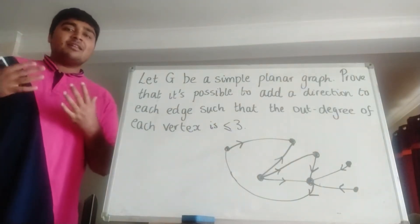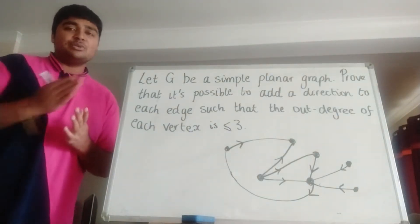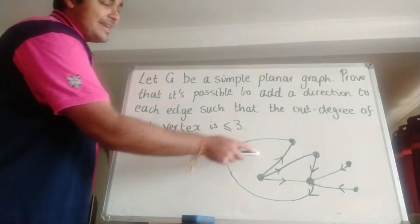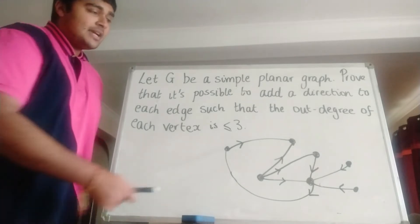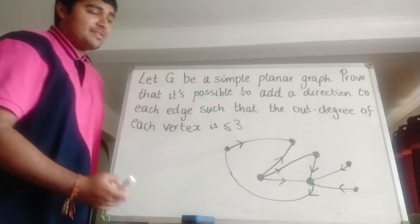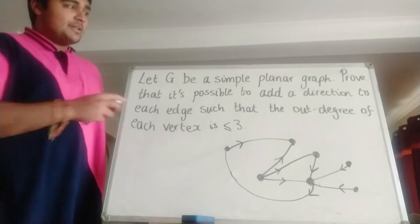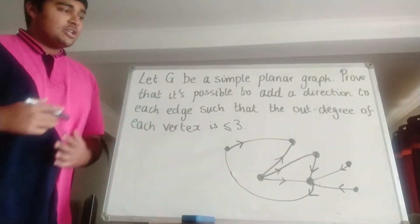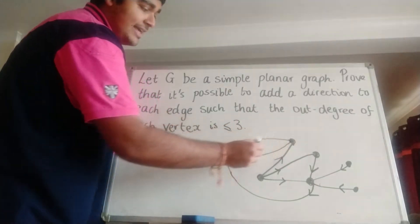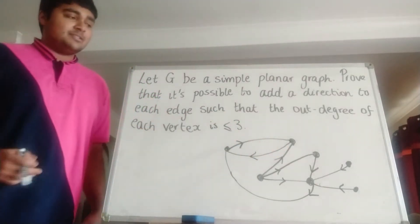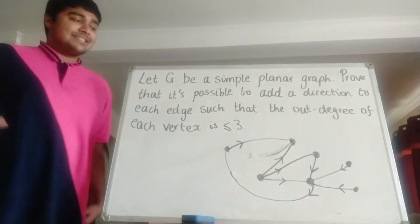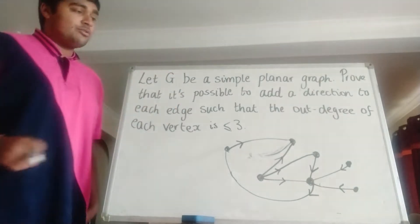The out-degree simply means the number of edges you can leave from. I've written up an example here — we start off with a simple graph and I've added arrows to each edge, corresponding to the direction. One thing to note is that because originally we have a simple graph, each edge is a one-way edge.